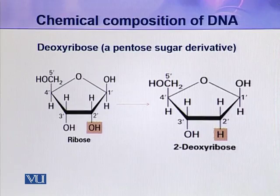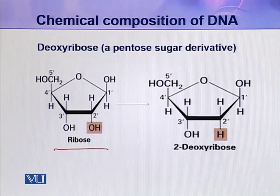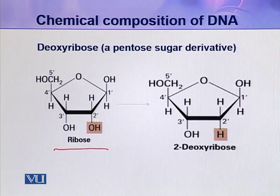Deoxyribose sugar is a pentose sugar derivative — it is derived from ribose sugar. This is ribose sugar, and look at the numbering. The carbons are numbered conventionally but a prime designation is added: 1 prime, 2 prime, 3 prime, 4 prime, and 5 prime carbons.